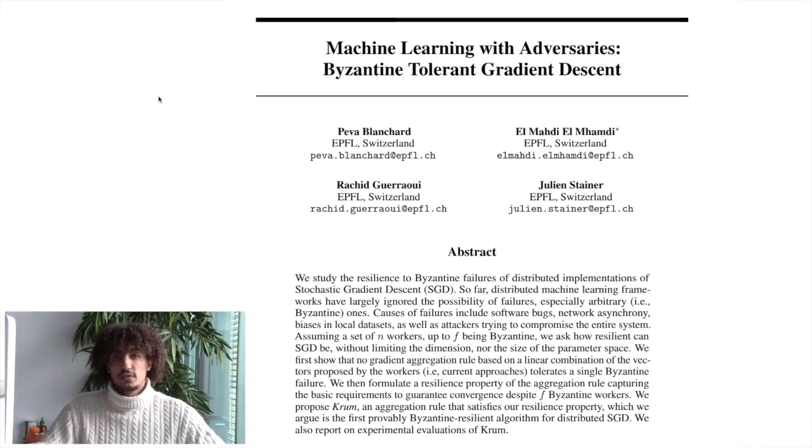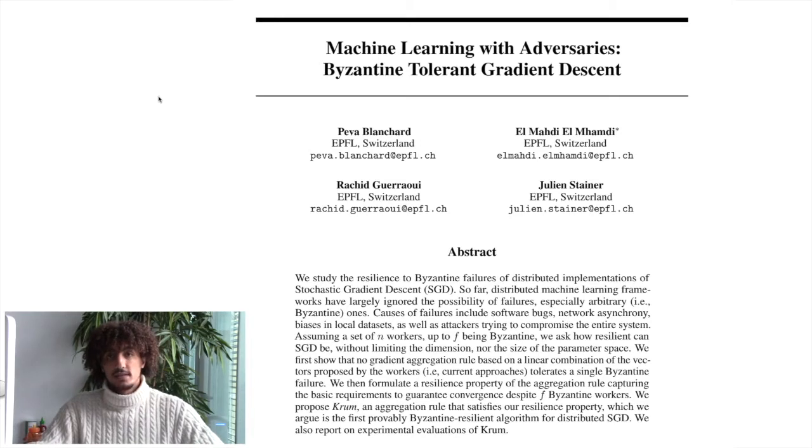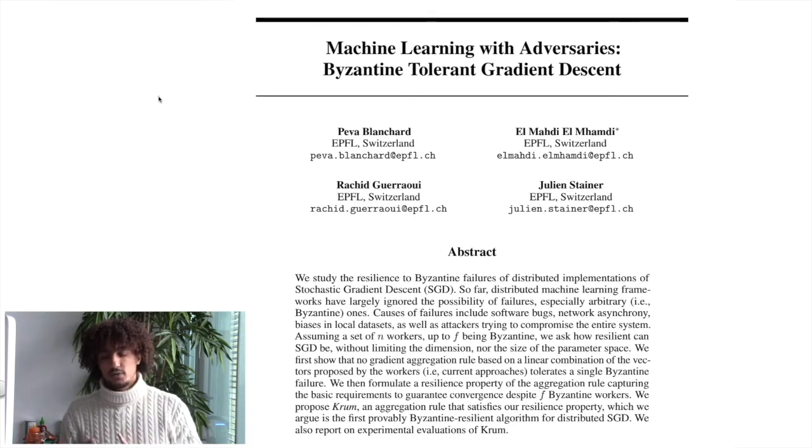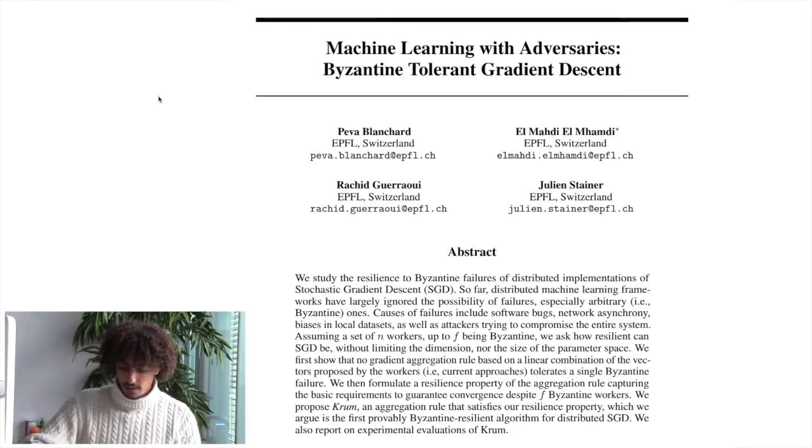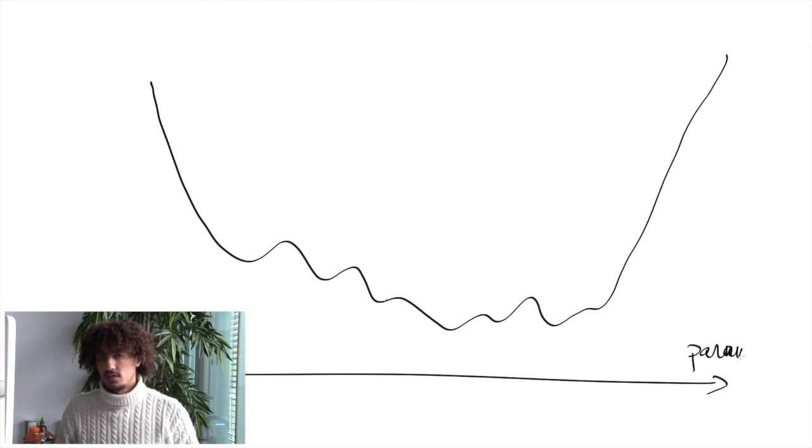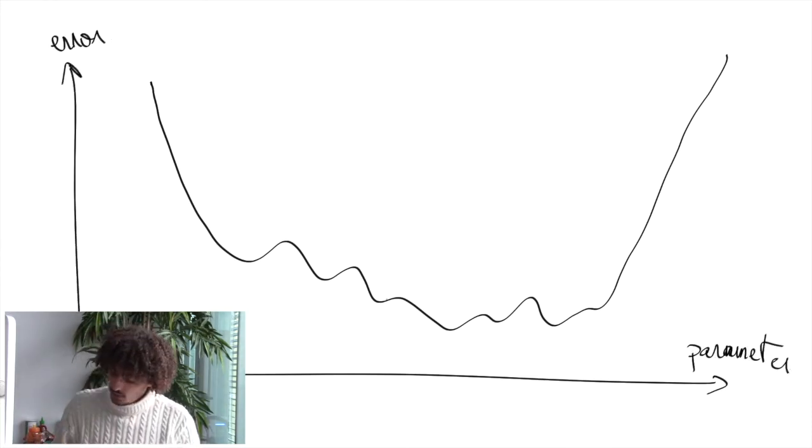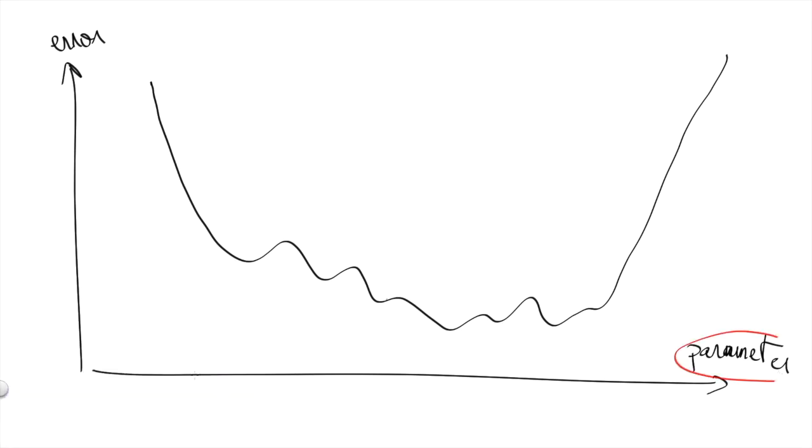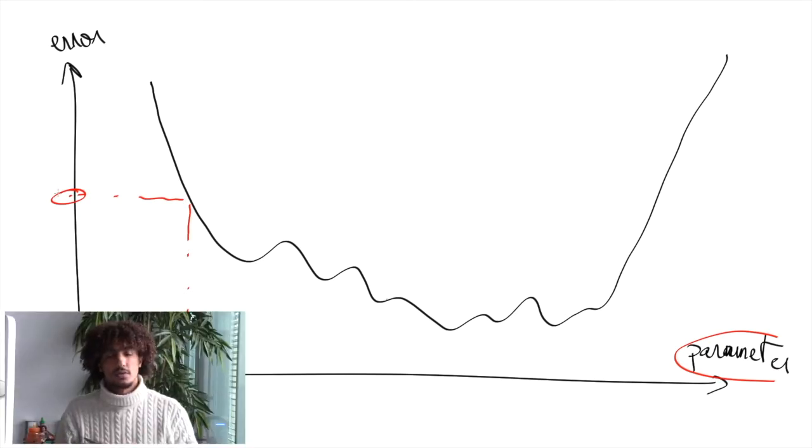At the heart of most of today's supervised machine learning lies the concept of gradient descent. Roughly speaking, learning with gradient descent boils down to the following: imagine you have an error which is how bad your model performs on training data. You can change the parameter to minimize this error. For example, you start somewhere here. This is how bad you are doing on the training data, on the data you are using to train your model.